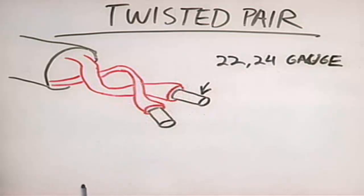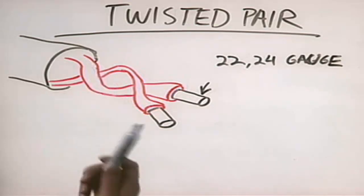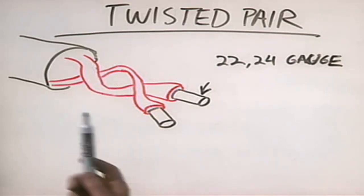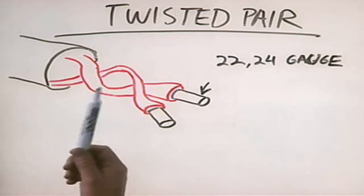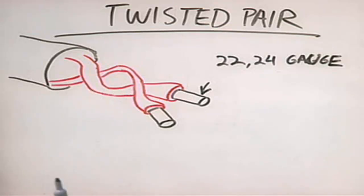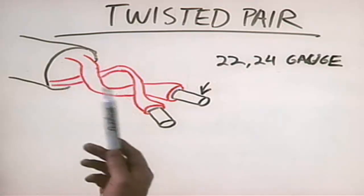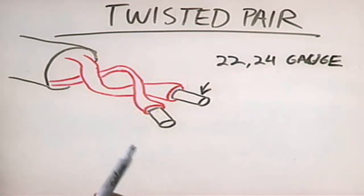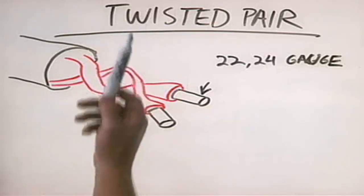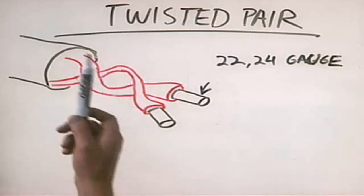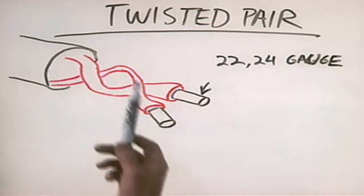Twisted pair wiring has a lot of advantages. Number one, it's very flexible and very easy to work with — it doesn't even compare to coaxial in terms of flexibility. In addition, it's extremely inexpensive compared to coaxial. And one of the big problems with coaxial was that modern fast networking standards don't support it — well, they do support twisted pair. You can get very, very fast data transfers with simple twisted pair wiring.